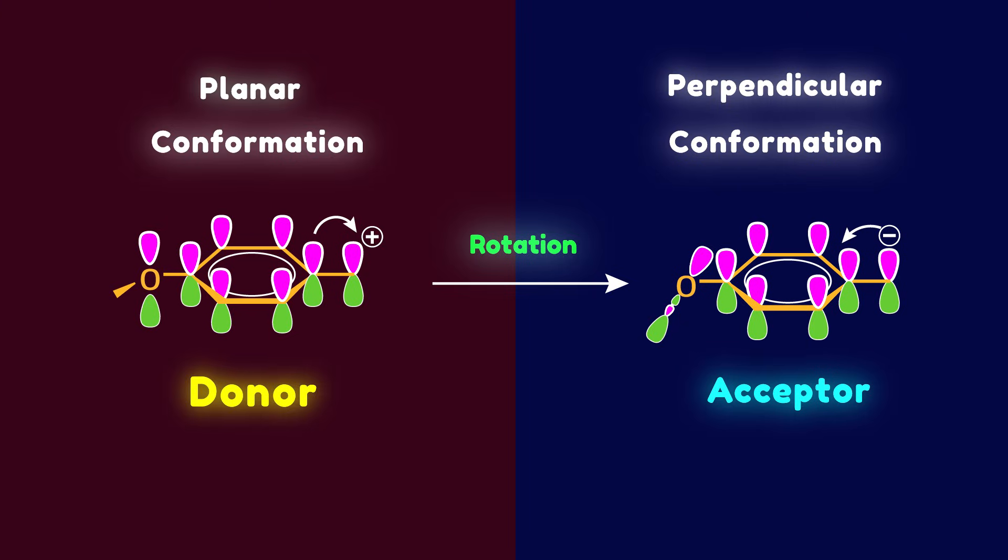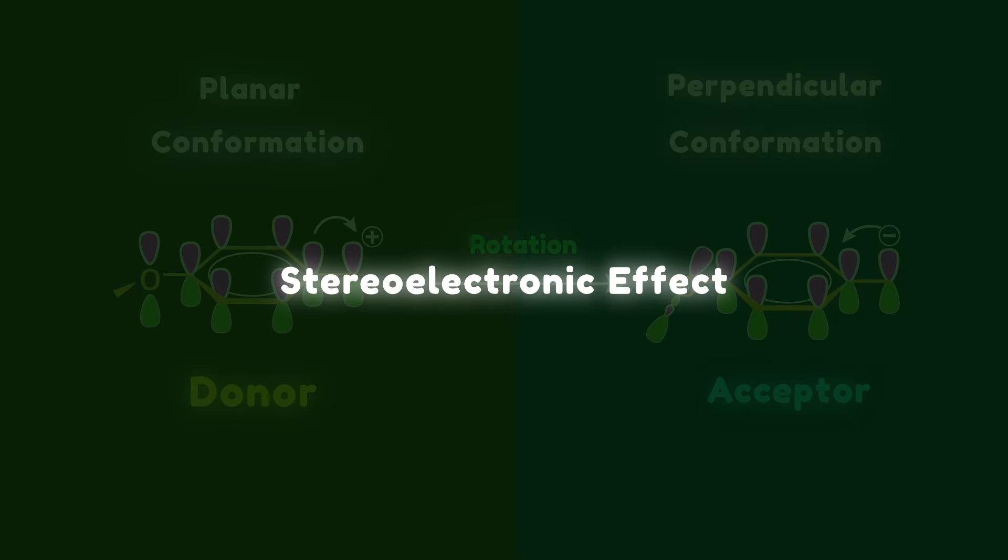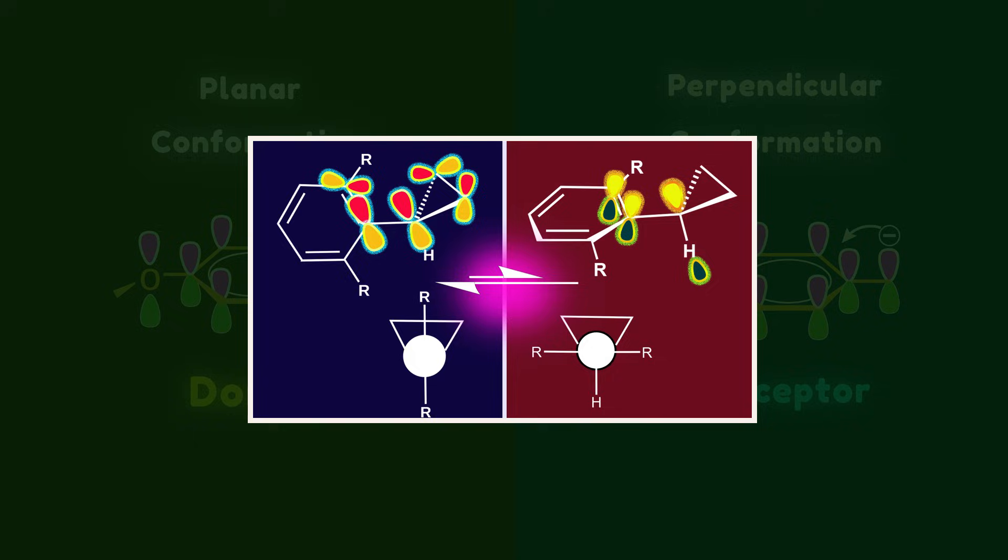This kind of orbital interaction is called stereoelectronic effect. If you want to know more about this interesting topic, I strongly suggest you watch this video I've linked in the description.